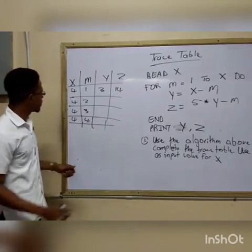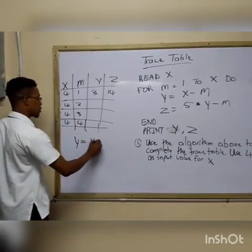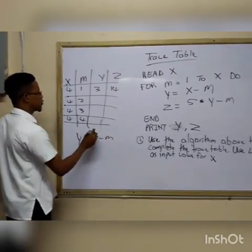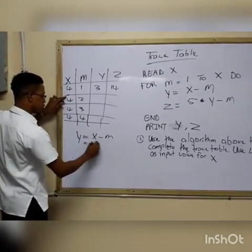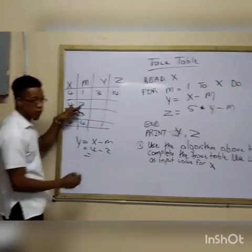Let's go to the second part of the trace table. So again, y equal to x minus m. So we are going to have x is still 4, minus m, which is now 2. So that's going to equal to 2.